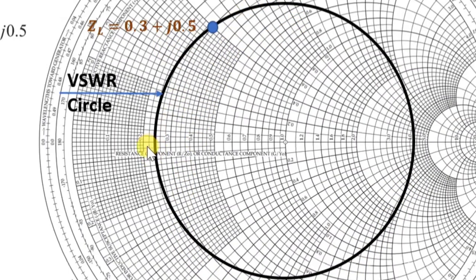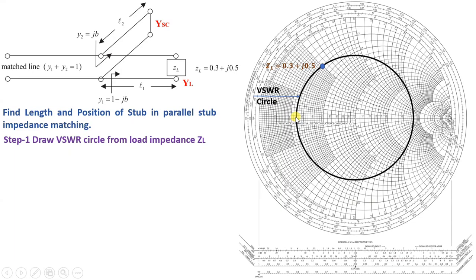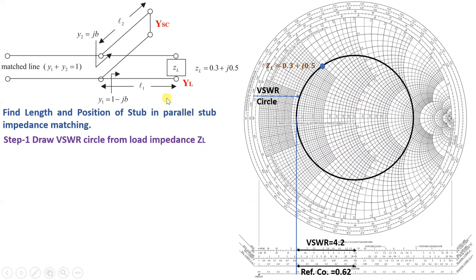Based on the VSWR circle we can identify VSWR and reflection coefficient. Stretching a straight line along the first axis gives VSWR — for this case it is 4.2. The third axis gives the reflection coefficient, which for this case is 0.62. So both reflection coefficient and VSWR can be read from here, but our main agenda is to identify the length and position of the stub.